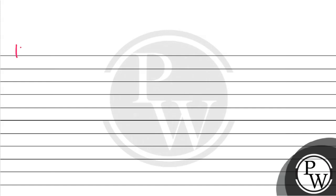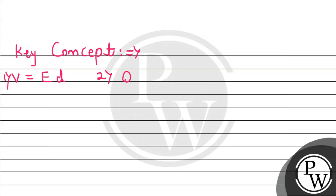Let's start with the solution. Before that, let's talk about the key concepts which we are going to use for this question. Since we know the formula of voltage in terms of electric field is given by E times D, we will use the second formula for charge across a capacitor, that is Q equals C times V, and the third formula for capacitance, that is C equals K times epsilon-naught times A divided by D.